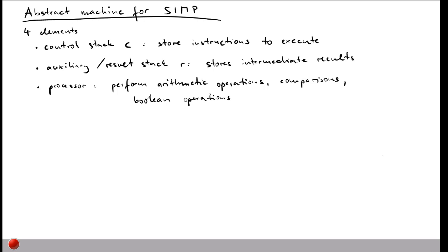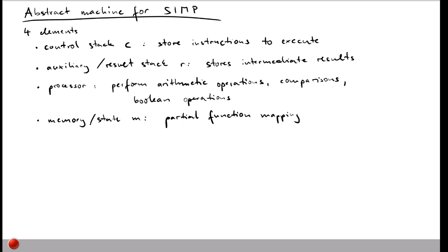Finally, a computer also needs some way to store its current state. This is done in our abstract machine using the memory, also called state, which we denote with M. You can think of this state or memory as a partial function that maps locations to values — specifically to integers, because these are the values that SIMP operates on.